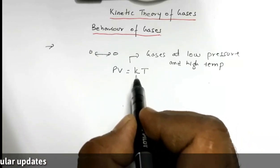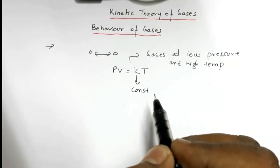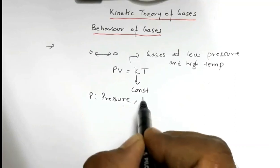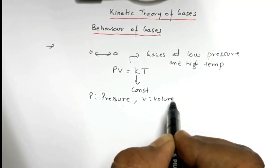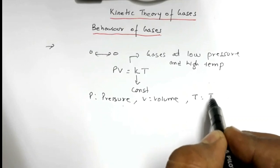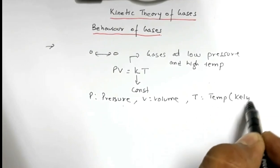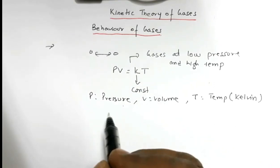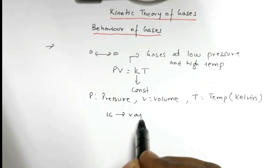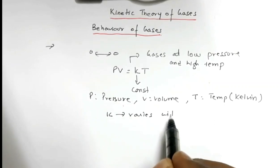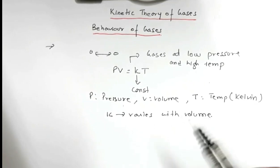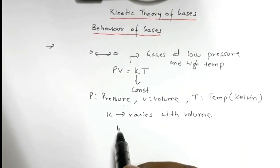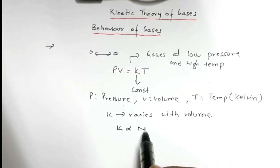In the relation PV = KT, K is a constant, P is pressure, V is volume, and T is temperature which should be in Kelvin. Though K is constant, it varies with volume and number of molecules. If it varies with volume, that means it also varies with number of molecules, so K is directly proportional to the number of molecules N.